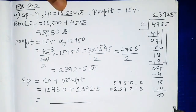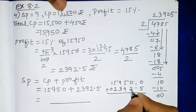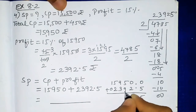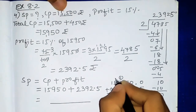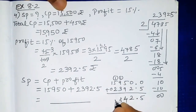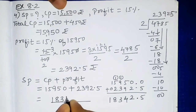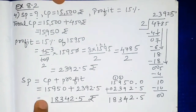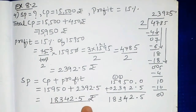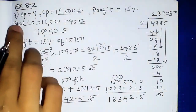Adding: 0 plus 5 gives 0.5 after decimal; 9 plus 2 is 11, carry 1; 5 plus 3 plus 1 is 9... continuing the addition: the result is ₹18,342.5. So ₹18,342.5 is the selling price of the article. This was the solution of question number 4 — hope you understood.